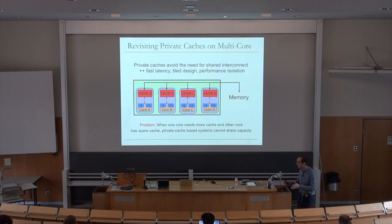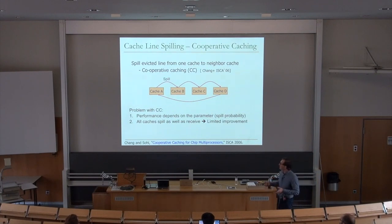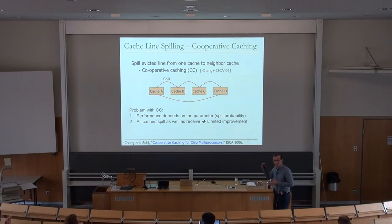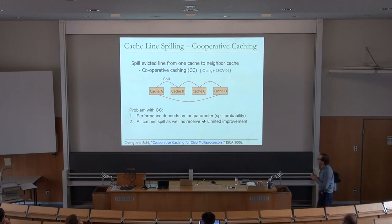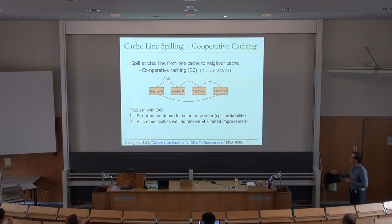One algorithm for spilling: whenever a cache evicts a block it spills it to a neighboring cache. You can choose an algorithm for whom to evict to, since caches may not be equidistant. There are latency issues as well. This work proposes a spill probability p: with probability p you evict the block entirely and with probability 1-p you put it in your neighbor's cache. But this is just flipping a coin — you don't know if the block will be reused.